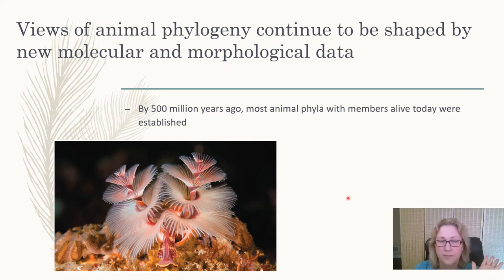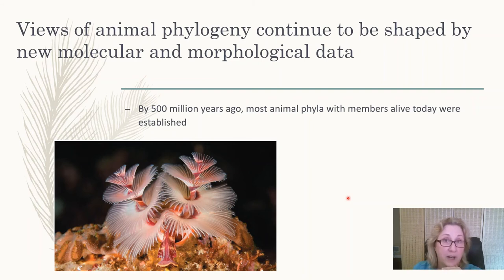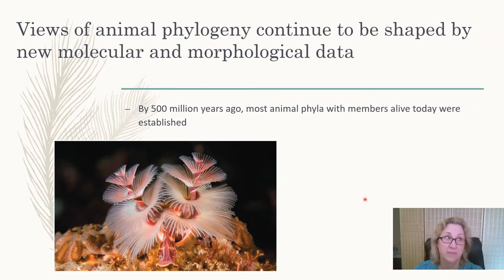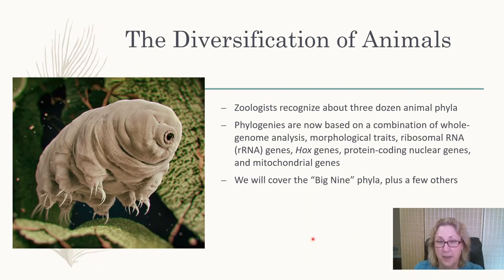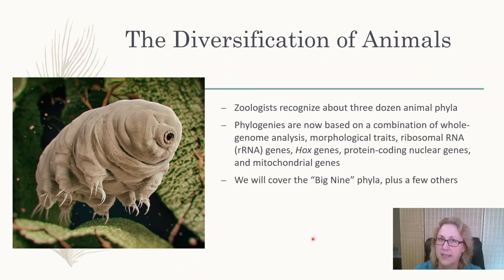Regarding when animals first appeared: the Cambrian explosion, about 500 million years ago, is when we find fossils of almost all the phyla that are still around today. There are also some fossil animals that probably belong to phyla that are now extinct. There are about 36 animal phyla total — though the number isn't exact, since it depends on how you group them and arguments continue about where particular organisms belong.